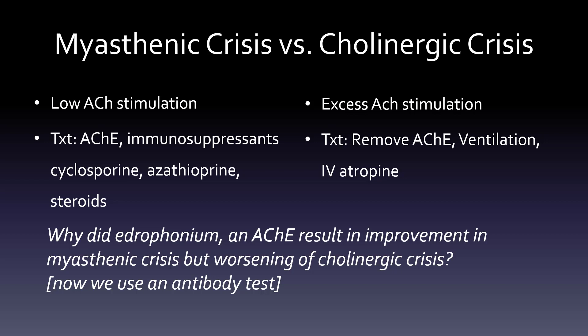The reason we don't give edrophonium anymore is that we were adding acetylcholine and making things worse. Treatments on the myasthenic crisis side — too little acetylcholine — include giving an acetylcholinesterase inhibitor to stop the breakdown and have more acetylcholine. It's also an immune condition, so we give immunosuppressants: cyclosporine, azathioprine, and steroids to suppress the immune system attacking itself.